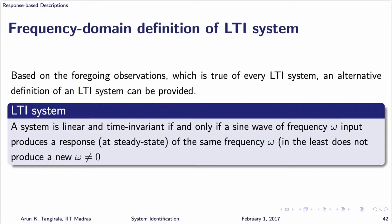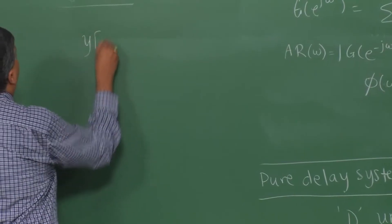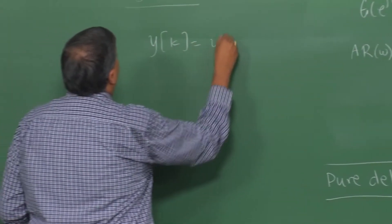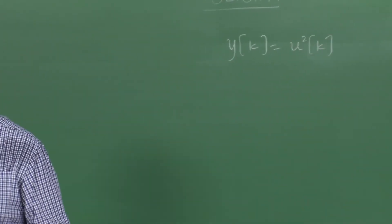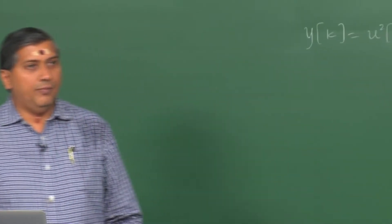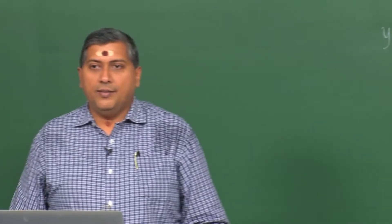If I want to see whether the system is linear, this is used for testing nonlinearities and time varying nature of systems. For example, if I had a very simple system, let's say y(k) equals u square k, is it time variant or time invariant? Is it time invariant? What about linearity? Nonlinear. So let us inject the sine wave at the input side.